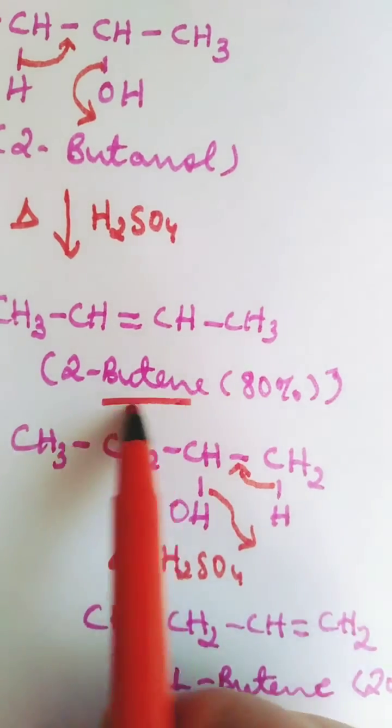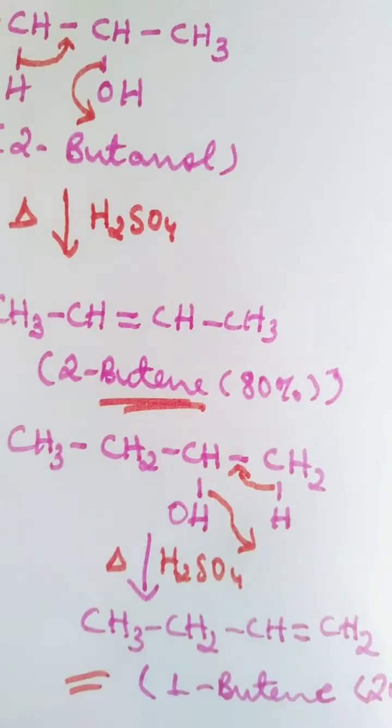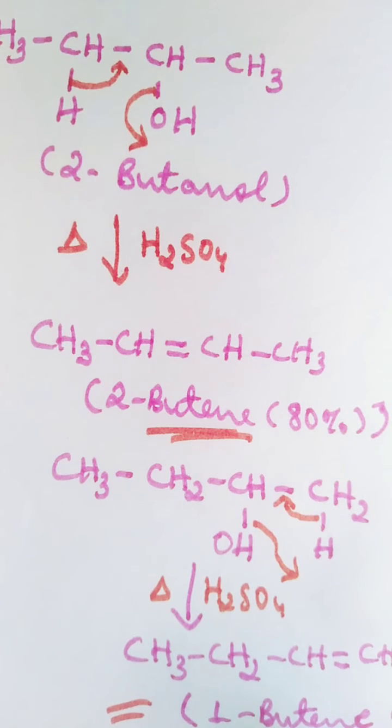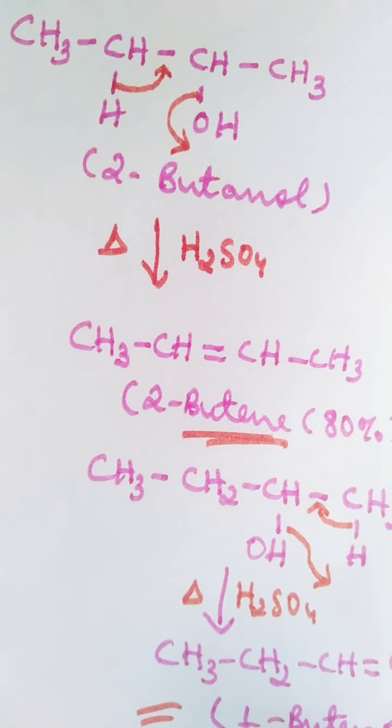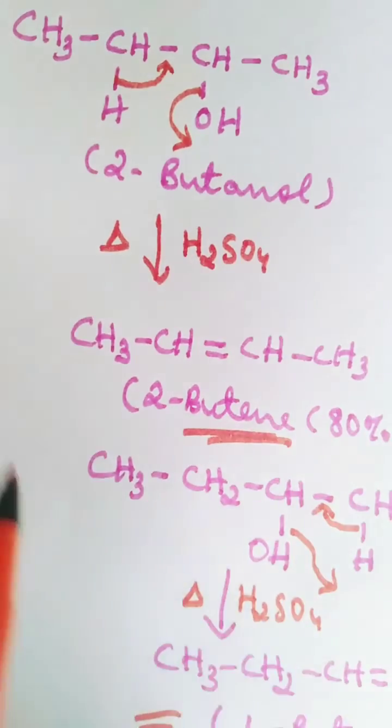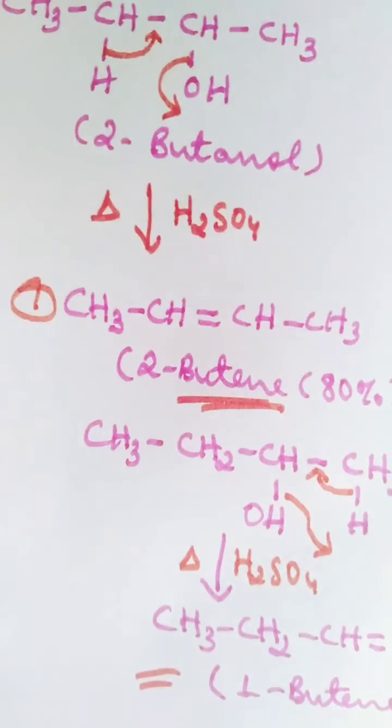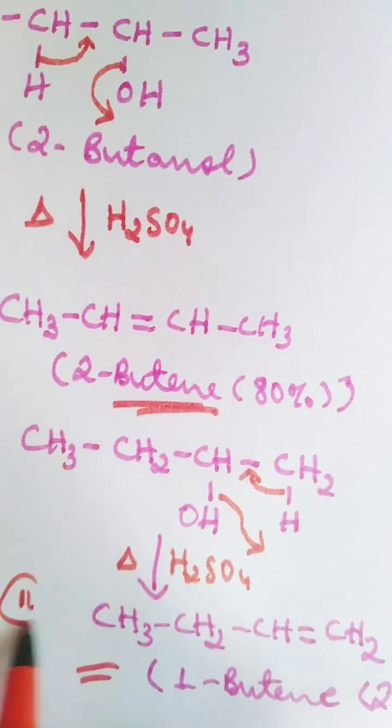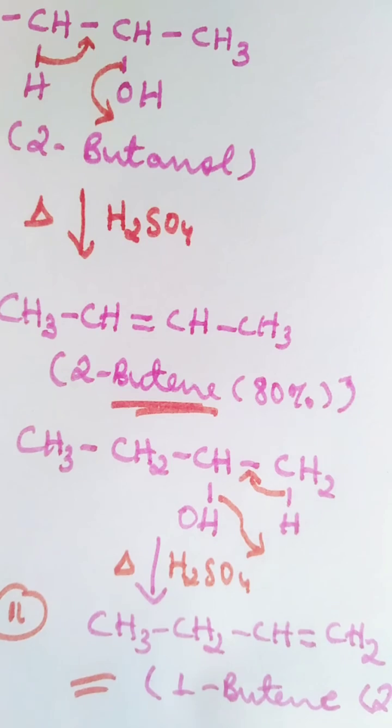So this one will be your major product, and this one is a minor product. Remember, if it is a secondary alcohol, then two alkenes are formed. In this case, 2-butanol is a secondary alcohol, so we get 2-butene, which is the major product, and 1-butene, which is a minor product. I hope it is clear. That's it.